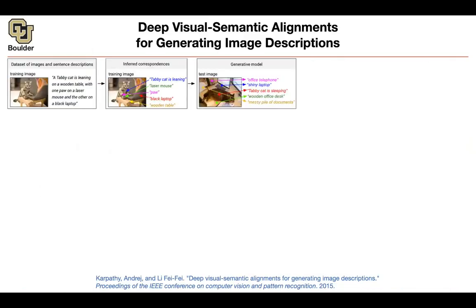One problem with caption generation is, as I mentioned for videos, it's the same problem for images. You're not going to have enough data, enough labeled data. This paper is a sort of data augmentation technique, so you're going to augment the data that your machine learning framework is going to see.